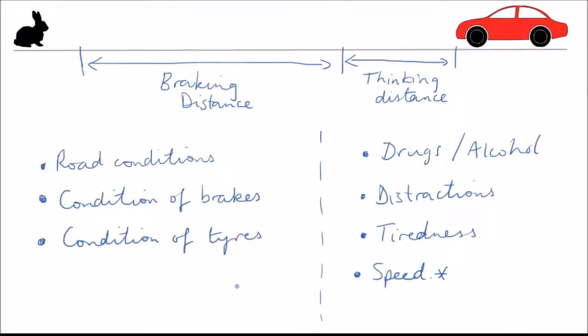Factors that affect the braking distance are those that affect either the condition of the road or the condition of the car's tyres or brakes. So if the road is icy or wet, or if the tyres are worn, or if the brakes are worn, then your braking distance will increase.